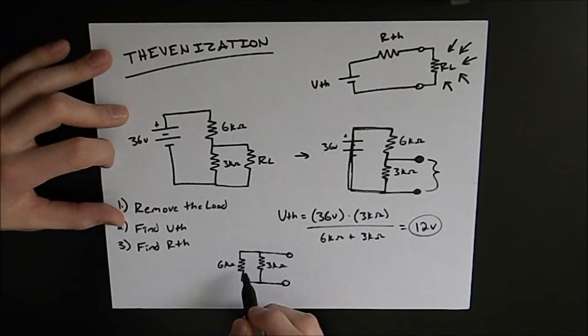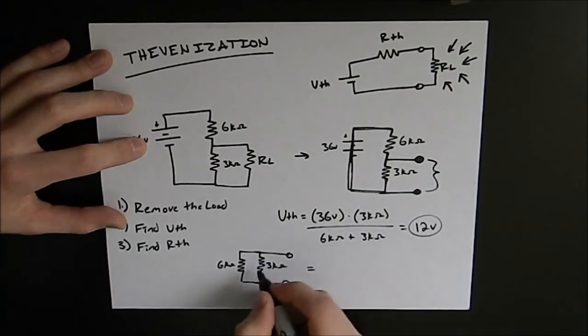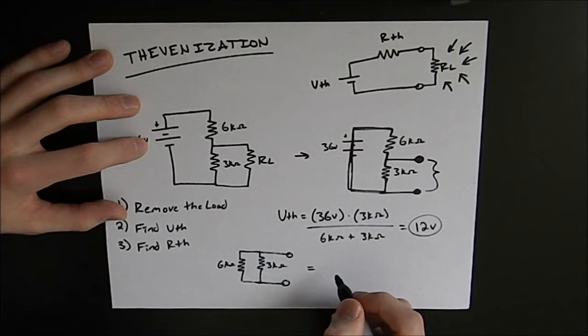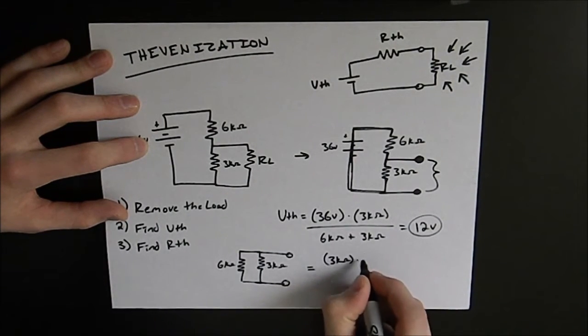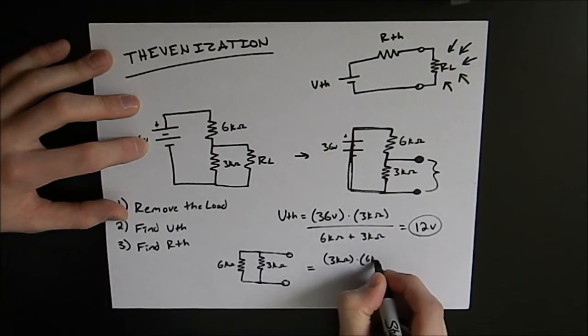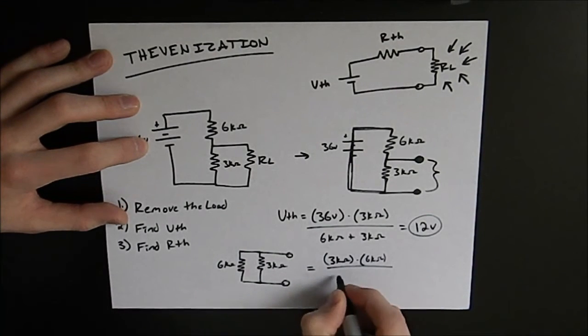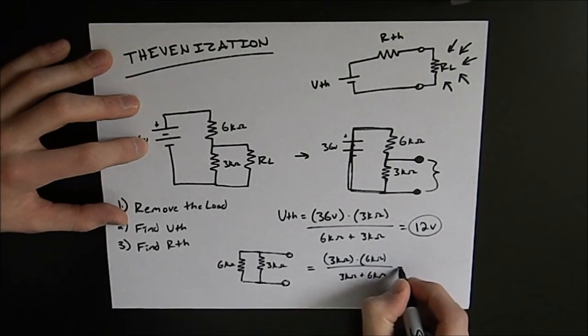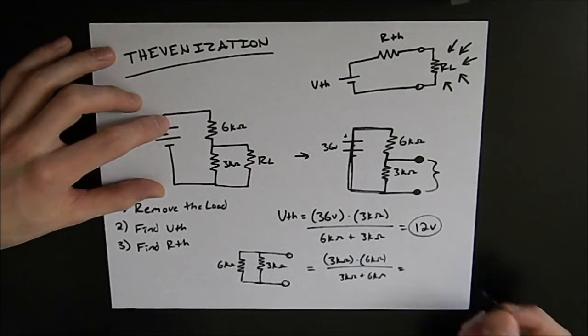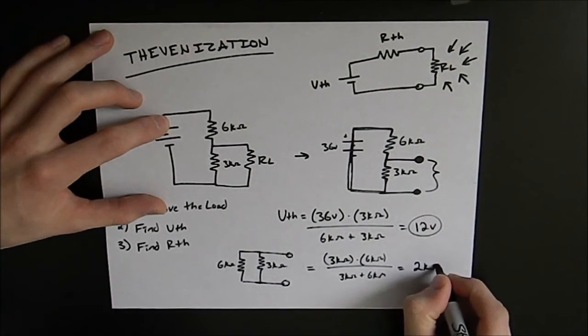The equivalent resistance of this circuit will be the resistance rule for two parallel resistors. So we're going to take them and multiply them. 3 kiloohms times 6 kiloohms. We're going to divide that by the sum of the two. So 3 kiloohms plus 6 kiloohms. What we find is our Thevenin equivalent resistance is 2 kiloohms.